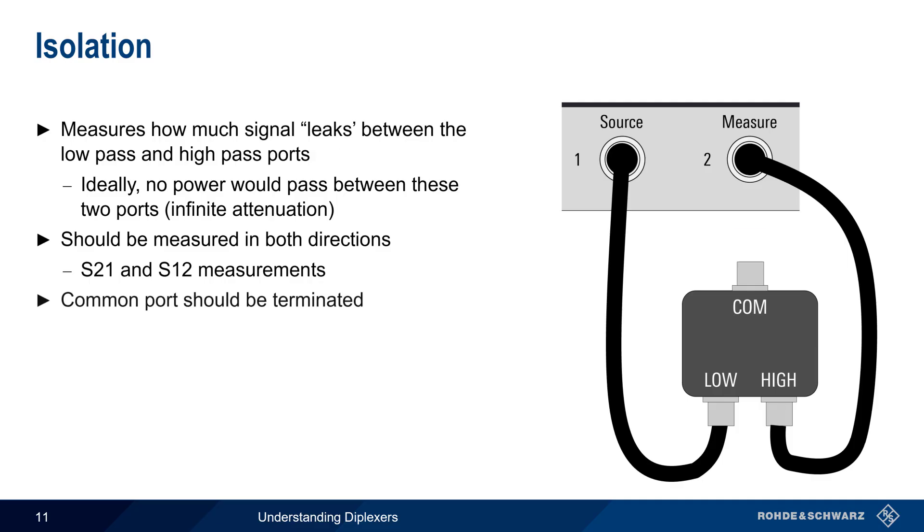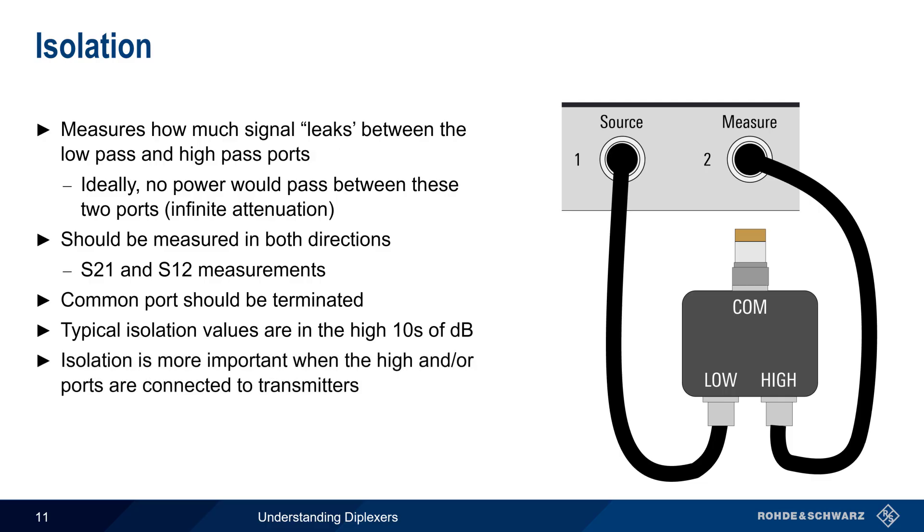As with other diplexer measurements, the unused port, in this case the common port, should be properly terminated. Typical diplexer isolation values are in the mid to high tens of dB. The degree of isolation becomes more important when the high or low ports are connected to transmitters, but is less important in the case where the diplexer is being used to connect to multiple antennas.